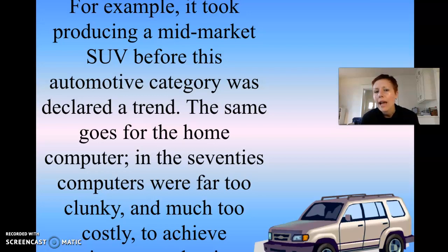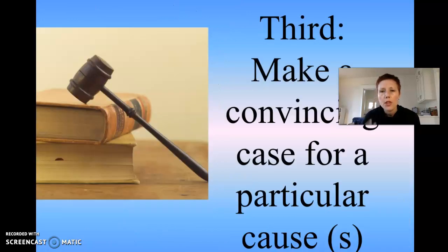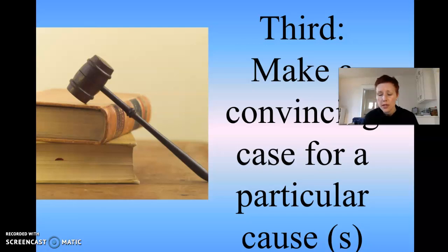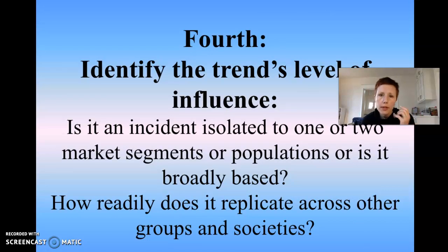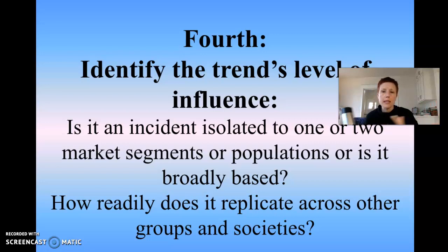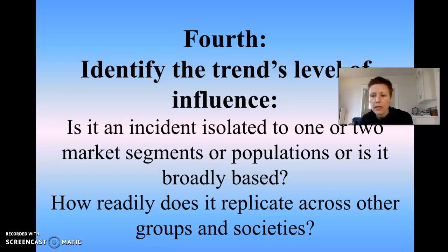The third thing you'll do is make a convincing case for the cause — you'll have to show research to back it up. This isn't an entirely research-based paper, but it will all be third person with no first person. Fourth, you'll identify the trend's level of influence: is it isolated to one or two market segments or populations, or is it broadly based — affecting the entire society? And how does it replicate across other groups and societies?